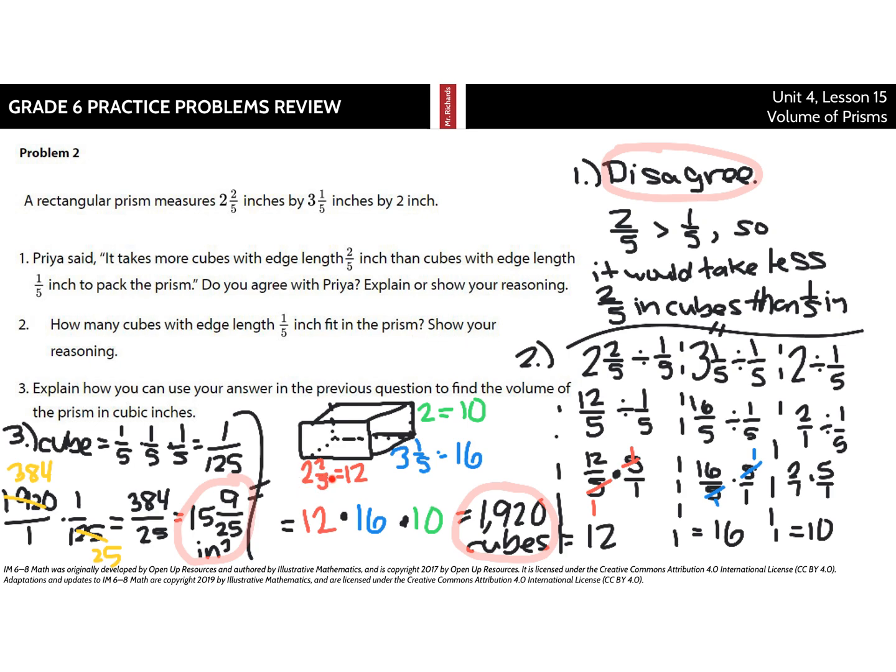We're basically taking our edge lengths here, two and two-fifths, three and a fifth, and two, and dividing each of those by one-fifths to see how many of those cubes will line up along these sides. And once I know how many cubes will line up along these sides I can multiply. So it's a bunch of division questions. Two and two-fifths divided by one-fifth which is twelve-fifths divided by one-fifths. Keep, change, flip-a-roos, cross-simplify, you get twelve. For the other side here, three and a fifth divided by one-fifth, three and a fifth is equivalent to sixteen-fifths divided by one-fifth. Keep, change, flip-a-roos, cross-simplify, you get sixteen. And then, lastly, you have the two. So two divided by one-fifth. You've got two over one divided by one-fifth. Keep, change, flip. Nothing to cross-simplify here, you just get two times five is ten.